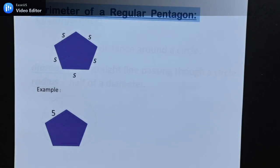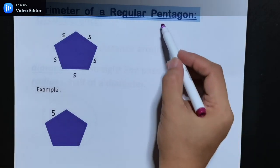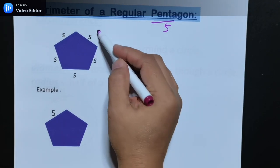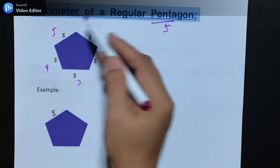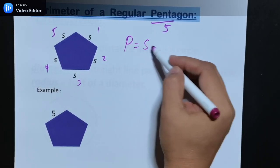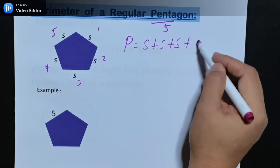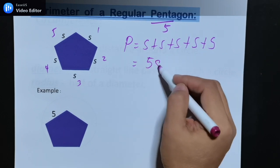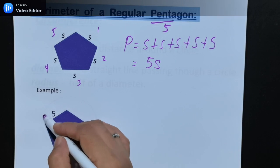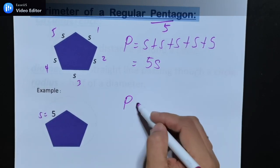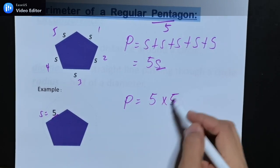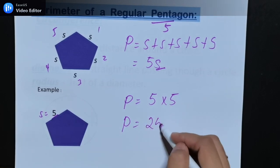Next, perimeter of a regular pentagon. Pentagon means 5, so it has 5 equal sides. The perimeter is S plus S plus S plus S plus S, or simply 5S. From this example, S = 5. So the perimeter is 5 times 5. The perimeter is 25.